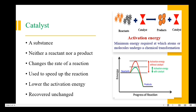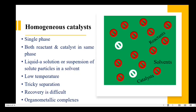Catalyst materials can be categorized into two types: homogeneous catalyst and heterogeneous catalyst. In homogeneous catalysis, both the reactants and the catalyst are in the same phase — single phase materials, usually a liquid phase solution or suspension of solute particles in a solvent. The process takes place at low temperature. However, the separation of catalyst is very tricky, that is recovery of catalyst is very difficult. An example is organometallic complexes.